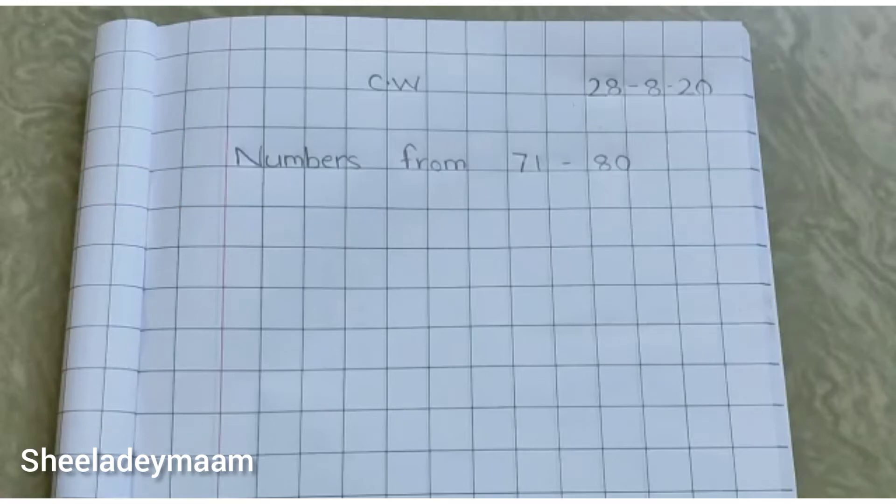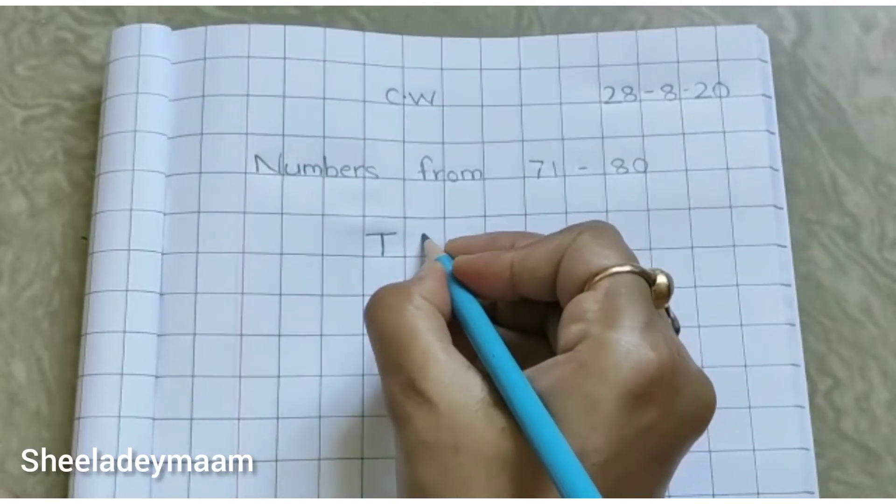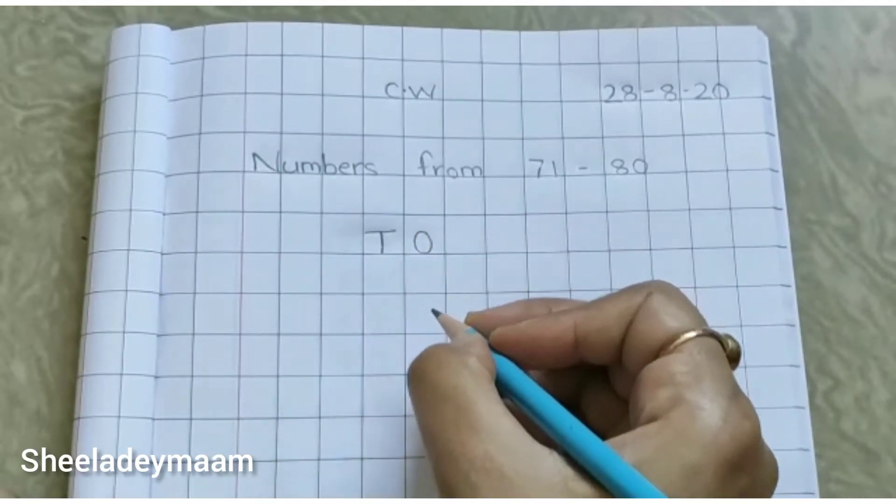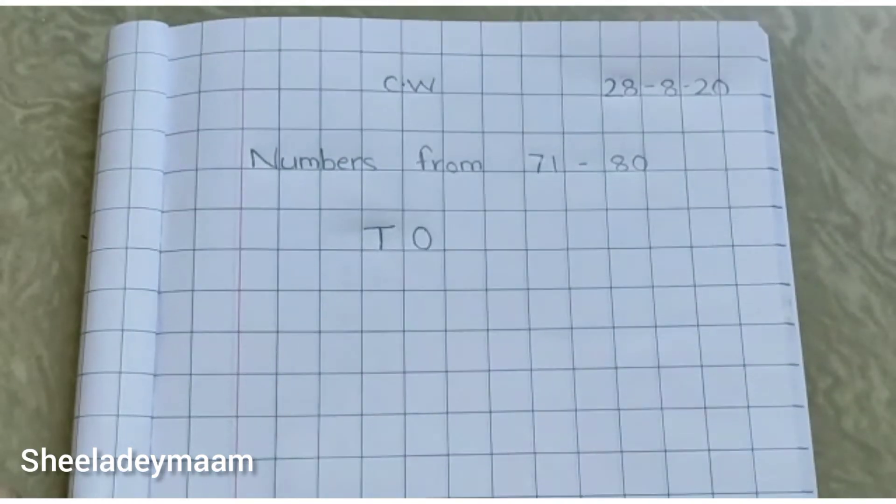Now write T O. Children, as you know, T means tens and O means ones.